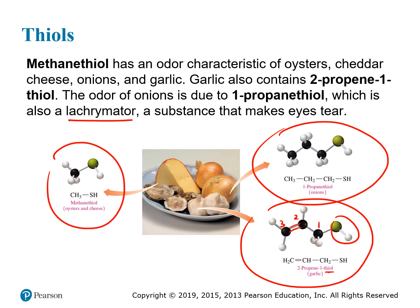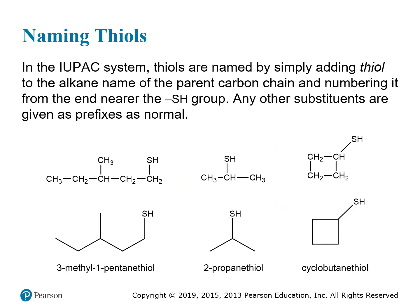Thiols are named similarly to alcohols, except instead of dropping the E and adding OL, you simply add 'thiol' — you don't even drop the E. For instance, methane with a hydrogen replaced by an SH group becomes methanethiol. For longer chains, you need a number: a five-carbon chain is pentane, and with the thiol on the first carbon it's 1-pentanethiol. If there's also a methyl group on the third carbon, it's 3-methyl-1-pentanethiol.